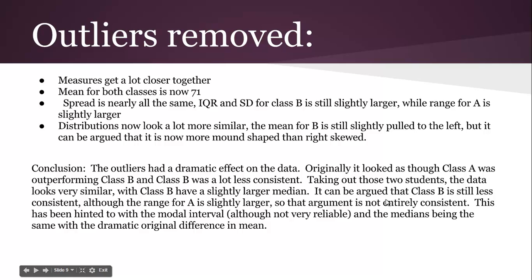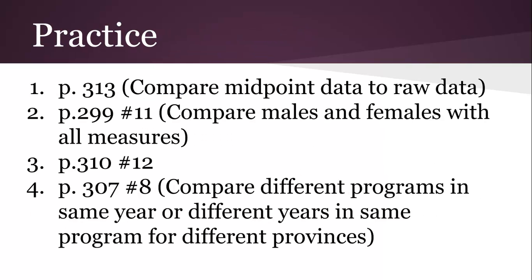The outliers are really interesting, because they did have a dramatic effect. And then if you take them out, the data looks very similar, class B is slightly larger median. It can be argued B is still less consistent, although the range for class A is slightly larger. So the argument's not entirely consistent. And this has been hinted to with the modal interval and the medians being the same with the dramatic original difference in the mean. So even though the average is so much higher in class A, we kind of suspect that there's something going on. If we take those outliers out, and you can argue that they should be in there a little bit, but if you take those outliers out, class B is doing a lot better. There's potentially pretty valuable information for them. If they focus on those two students, then they're doing a lot better.